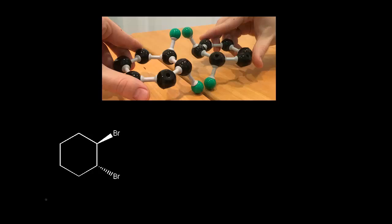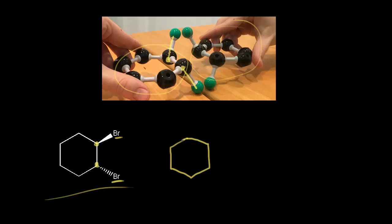Now let's draw the enantiomer of this cyclohexane compound using the mirror method. In this simplified representation, at one carbon our bromine is going down in space, and at the other carbon bromine is going up in space. In the mirror we can see the enantiomer. So we draw our cyclohexane ring, and at this carbon we have our bromine going down in space, and at this carbon we have our bromine going up in space — that's a wedge. So this drawing on the right is the enantiomer.